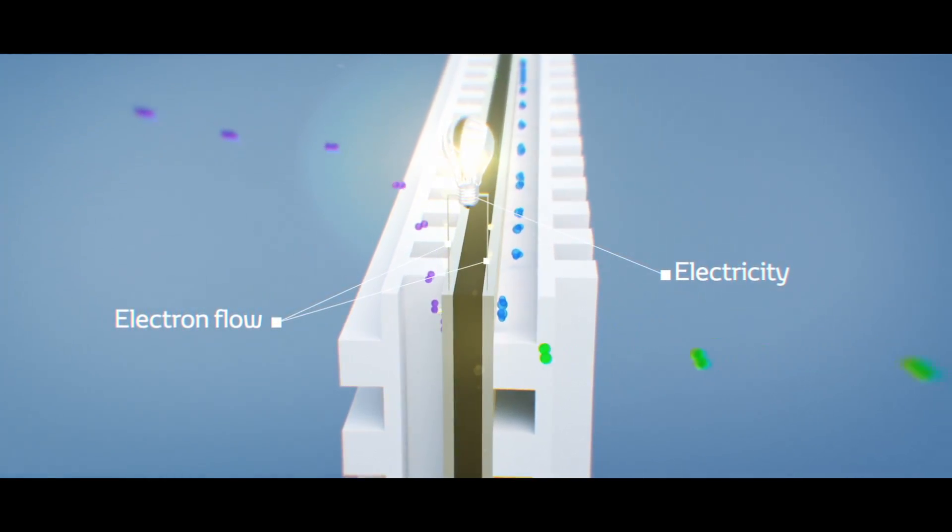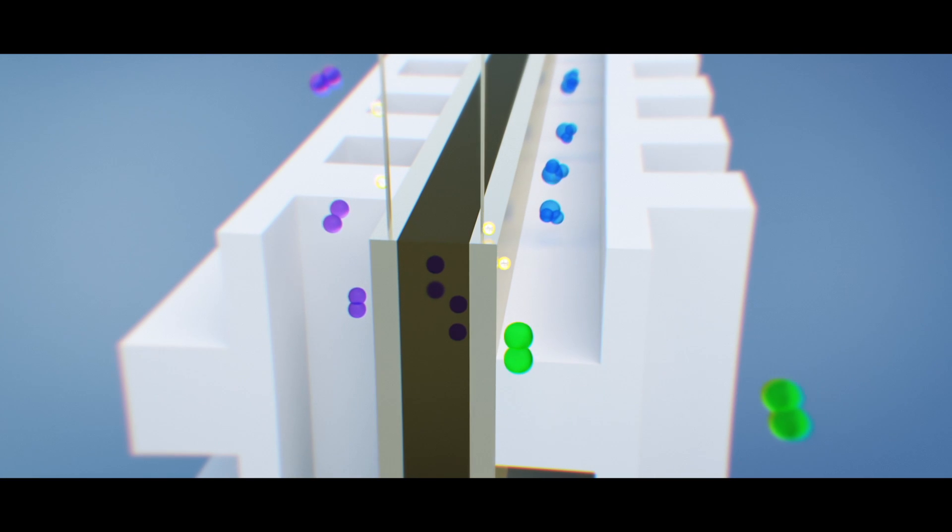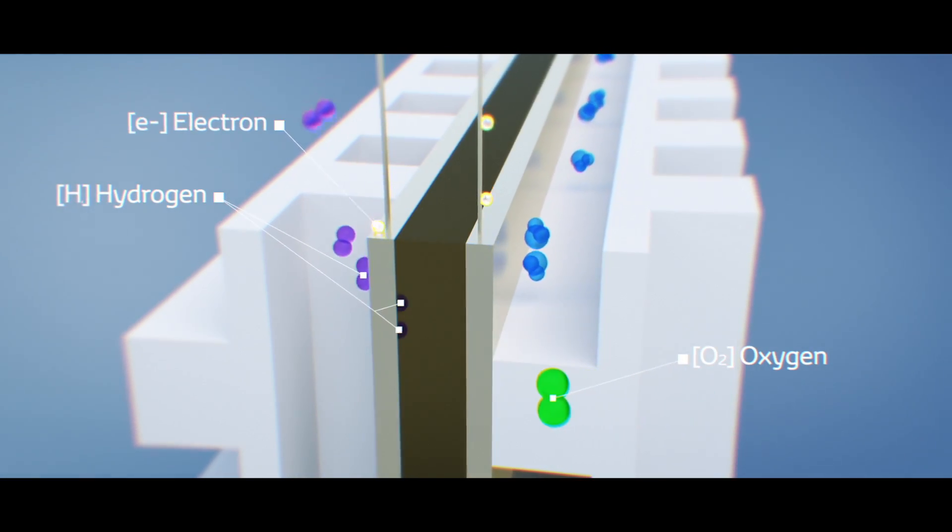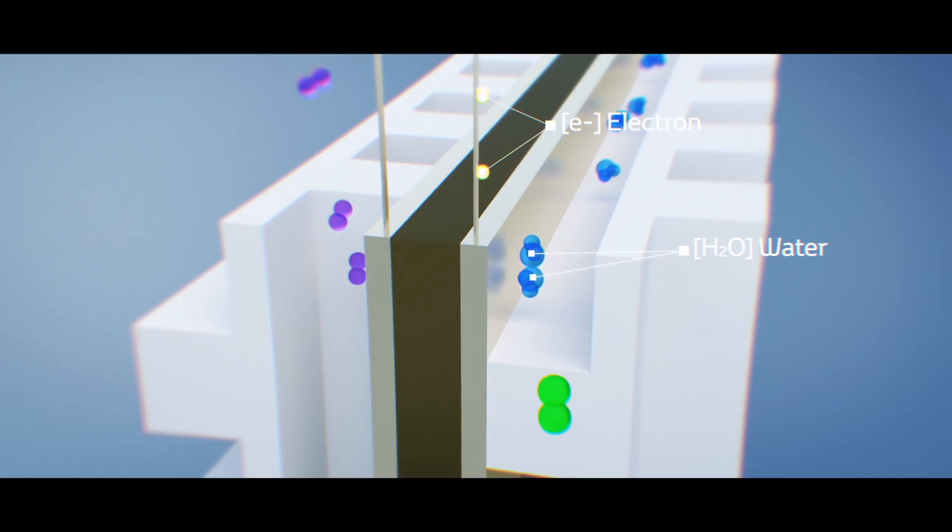After releasing the electron, the hydrogen becomes a hydrogen ion, moving to the positive cathode and bonding with the oxygen in the air, forming water.